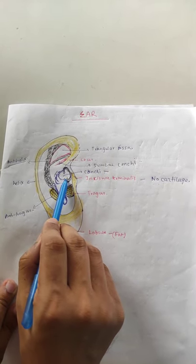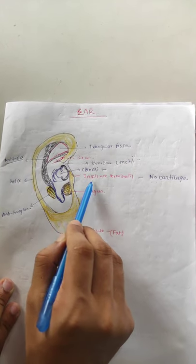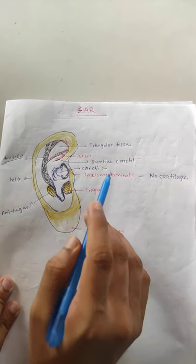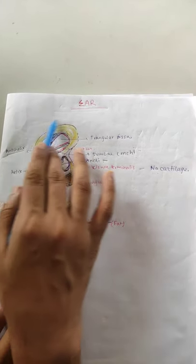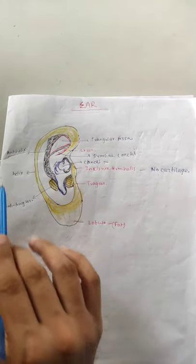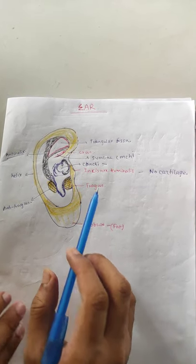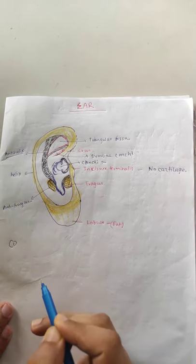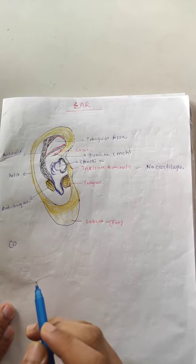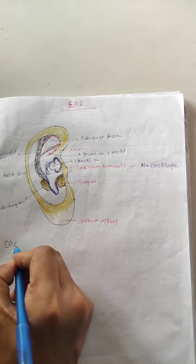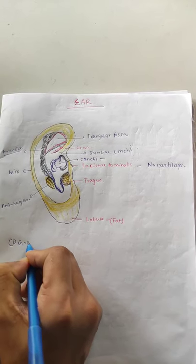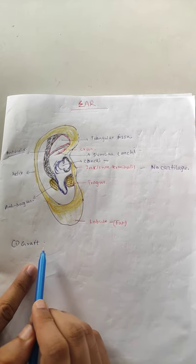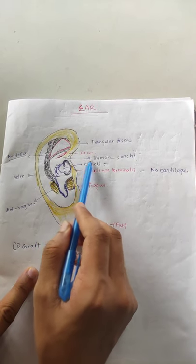The Concha is the depressed part that opens toward the external acoustic meatus. The external ear is of clinical importance: number one, it is useful as graft material for reconstruction surgery, particularly in the middle ear.